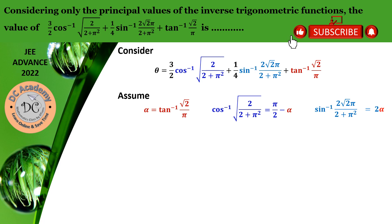We are able to obtain the three terms separately in terms of alpha. Let's try to calculate or simplify the value of theta now. Theta equals 3 by 2 times (pi by 2 minus alpha) plus 1 by 4 times 2 alpha plus alpha. If we multiply and add them together, we get 3 pi by 4 minus 3 alpha by 2 plus alpha by 2 plus alpha. We can easily say that alpha plus alpha by 2 will be 3 alpha by 2, which will be cancelled out by minus 3 alpha by 2.